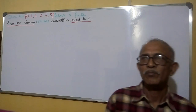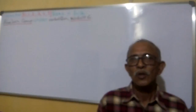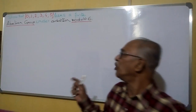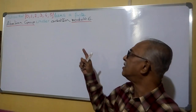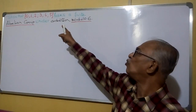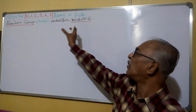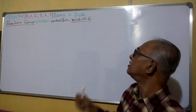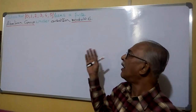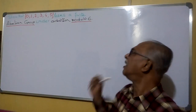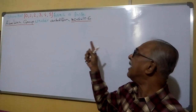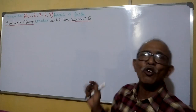Welcome. We are going to show you that {0, 1, 2, 3, 4, 5}, this set of numbers, forms a finite abelian group under addition modulo 6.